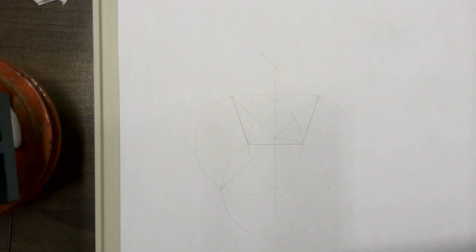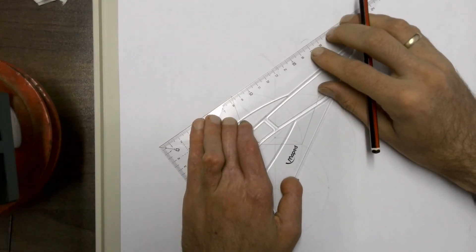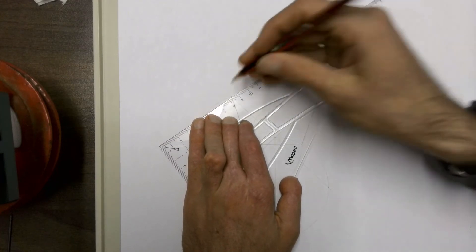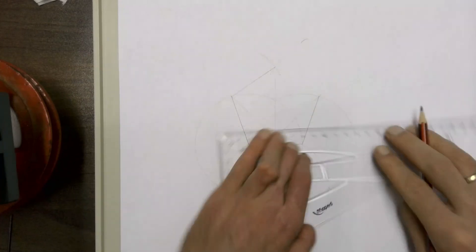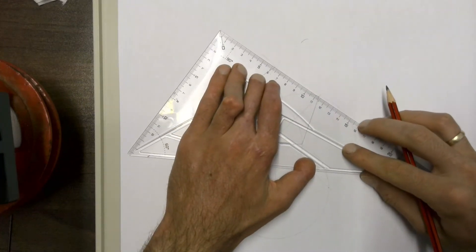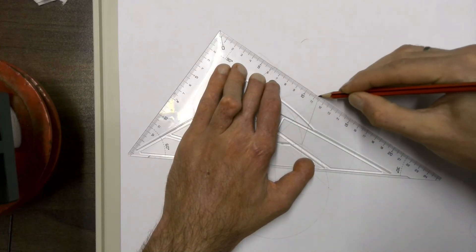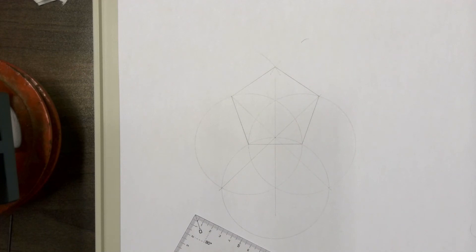Where those two arcs come together, draw a line from the end of that side through to where those two arcs have come together. You've now completed your pentagon construction.